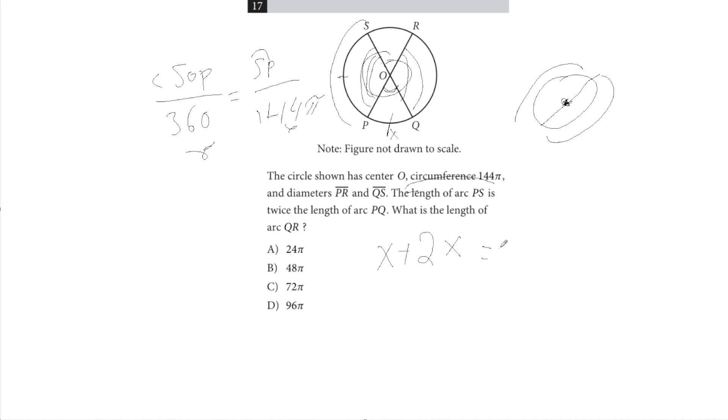equals 72 pi. And now why do we do 72 pi? Well, we have the circumference, which is 144, and since this is a diameter, it cuts this length in half. So we have X and 2X, and they should sum up to half of the circumference, which is 72 pi.